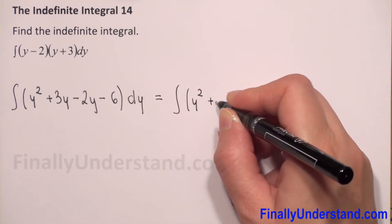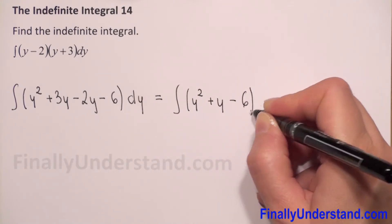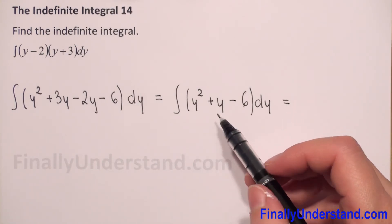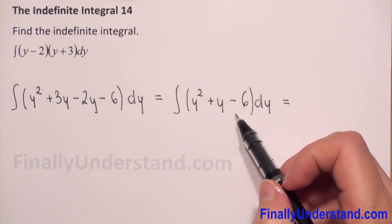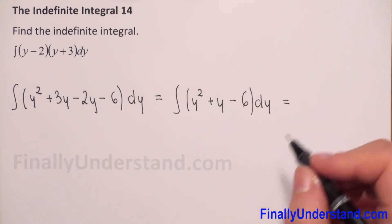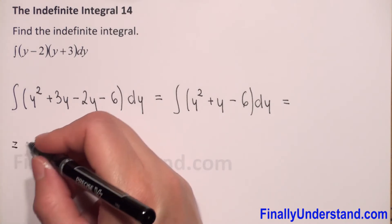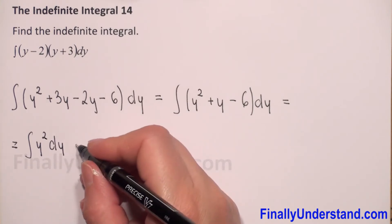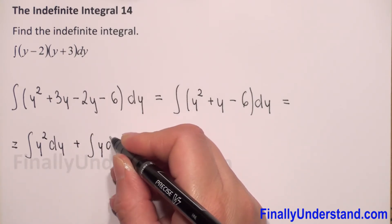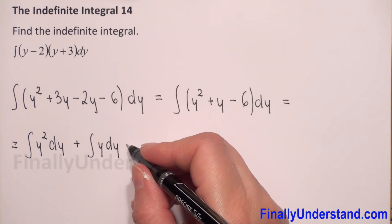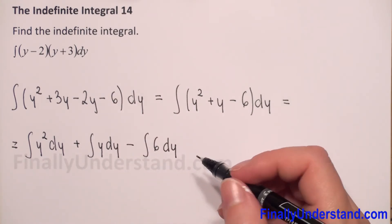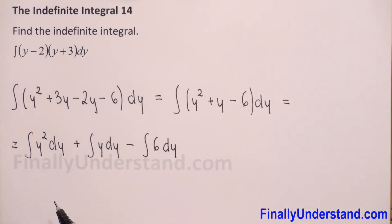So we have the integral of y squared plus y minus 6 with respect to y. Because we have the integral of a sum and difference, we can rewrite this as separate integrals: the integral of y squared with respect to y, plus the integral of y with respect to y, minus the integral of 6 with respect to y.